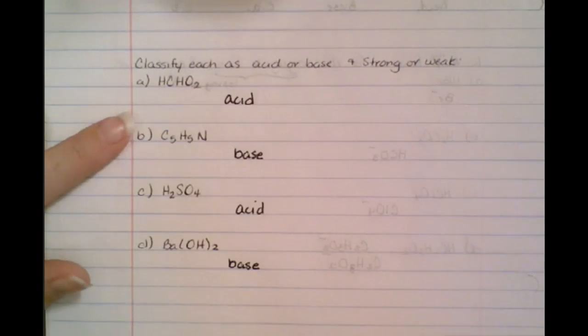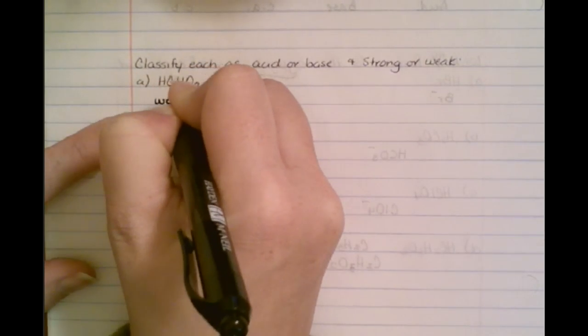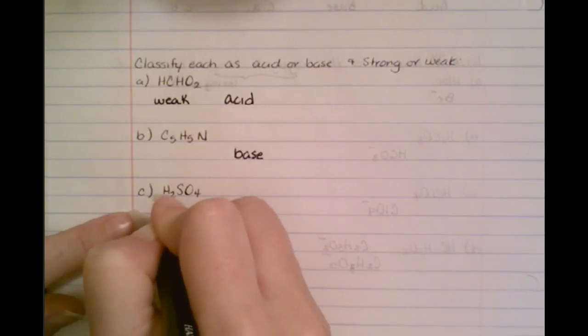So this first one is monoprotic, so we know that it is a weak acid. We come down here, we've got H2. That's a diprotic acid. And when we subtract our oxygen and our hydrogen, we still have two. So we know that this is a strong acid.